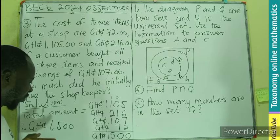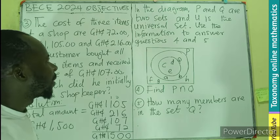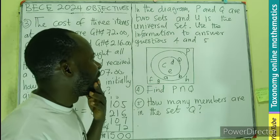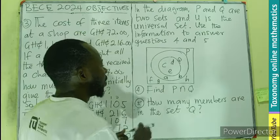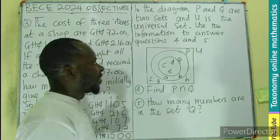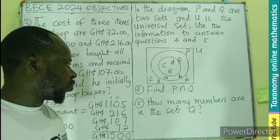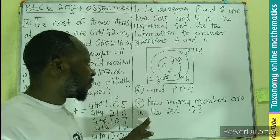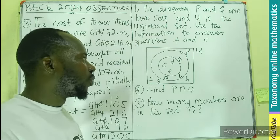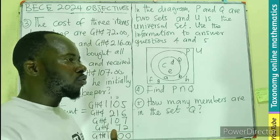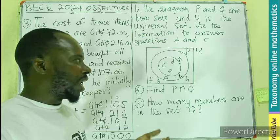This is what we are looking for. All right, in the diagram, P and Q are two sets and U is the universal set. We are to use the information to answer questions 4 and 5. Question 4 is: find the intersection of P and Q - the elements that belong to both P and Q.